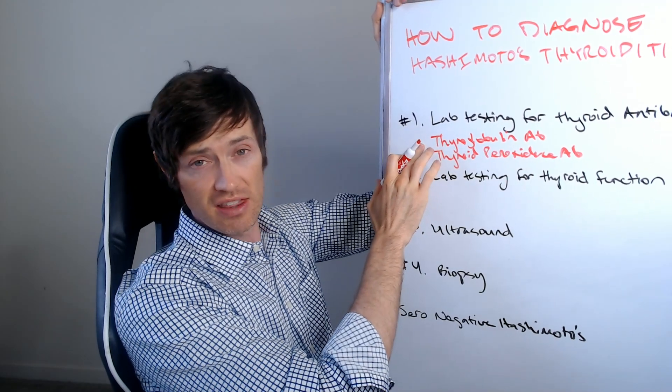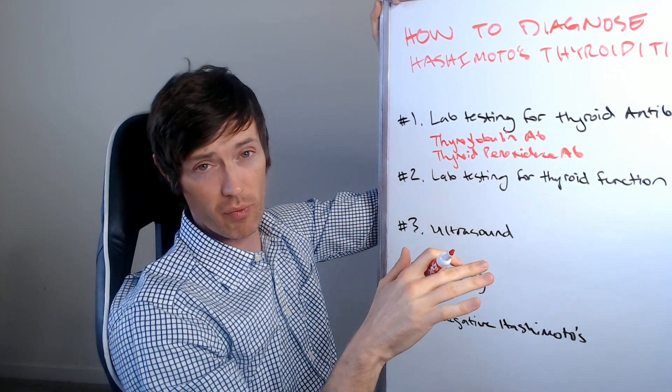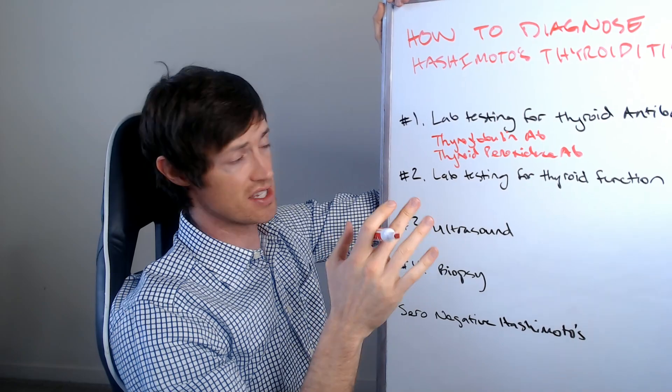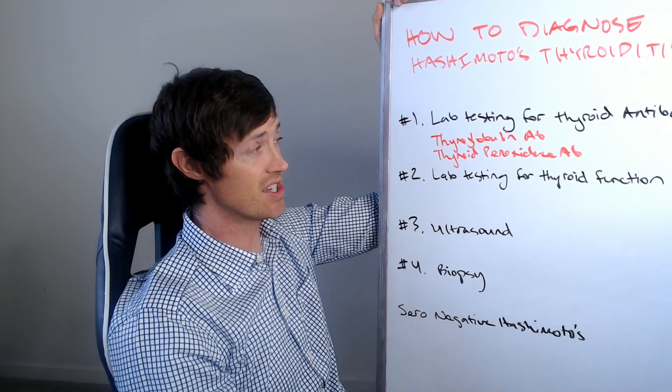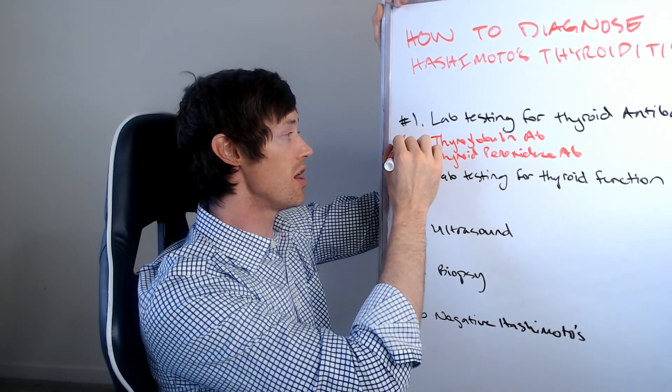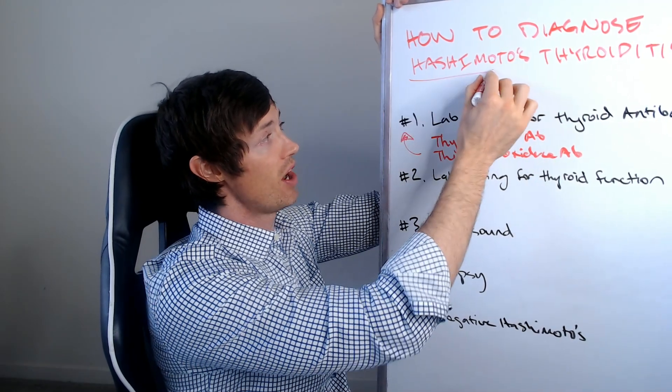If you have these antibodies elevated in your blood, and by the way, you can check them, insurance covers it. It's not hard to get them. If you have the presence of these antibodies at an elevated state inside of your blood, it is a strong indication that you have Hashimoto's thyroiditis.